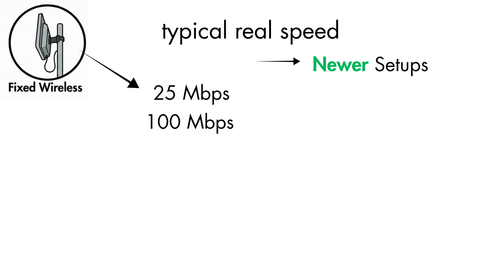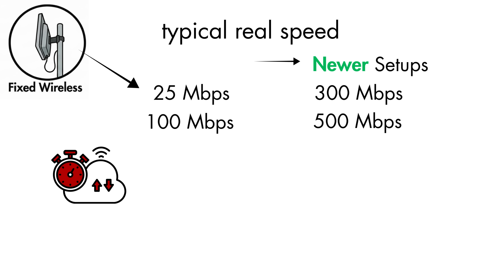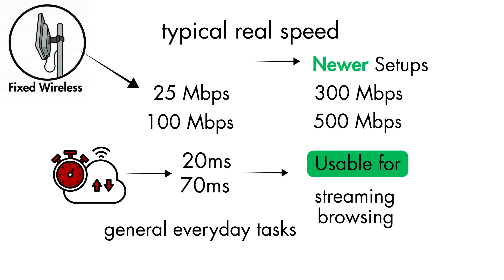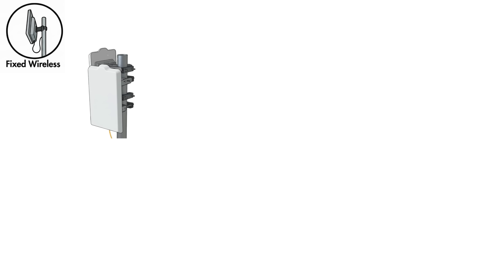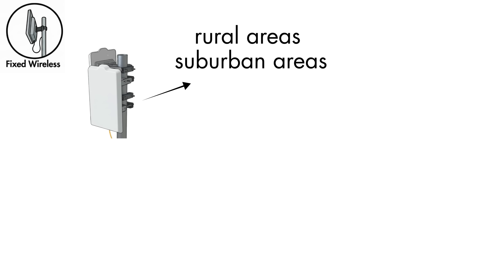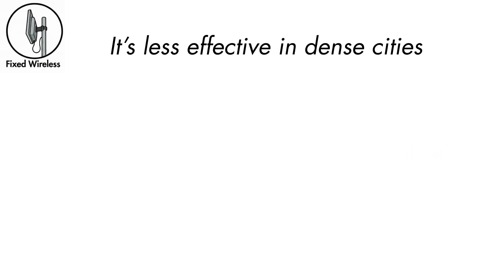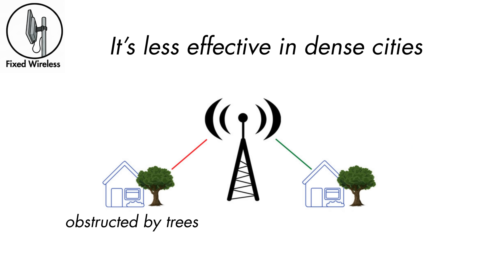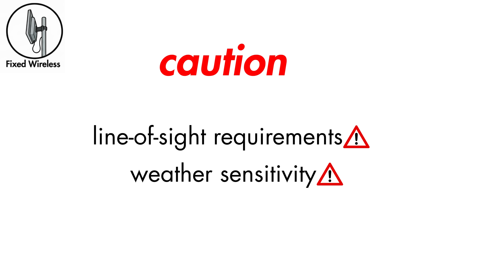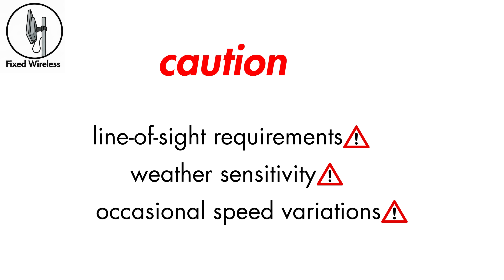Real-world speeds typically range from 25 to 100 Mbps, with newer setups reaching 300 to 500 Mbps. Upload speeds are lower, and latency usually sits around 20 to 70 milliseconds — much smoother than old satellite systems and usable for streaming, browsing, and general everyday tasks. Fixed wireless works best in rural and suburban areas where wired options are limited but you have a clear line-of-sight to a nearby tower. It's less effective in dense cities or heavily blocked areas with trees, hills, or tall buildings. Tradeoffs are line-of-sight requirements, weather sensitivity, and occasional speed variation.